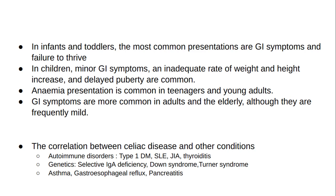In infants and toddlers, the most common presentations are GI symptoms and failure to thrive. In children, minor GI symptoms, an inadequate rate of weight and height increase, and delayed puberty are seen. Anemia represents the most prevalent form of presentation in teenagers and young adults. GI symptoms are more common in adults and the elderly, although they are frequently mild.